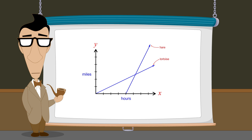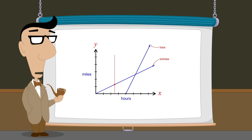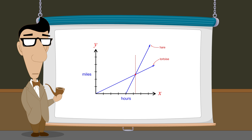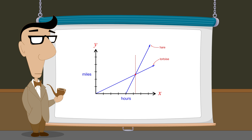Graphing their distances from the starting point as functions of time, the tortoise starts first, traveling at a constant speed of one-half mile per hour. After giving the tortoise a four-hour head start, the hare begins the race, traveling at a constant speed of two miles per hour. Since the hare's speed is greater than that of the tortoise, the slope of the hare's graph is greater, causing the two graphs to intersect. This intersection represents the point at which the tortoise and hare meet.